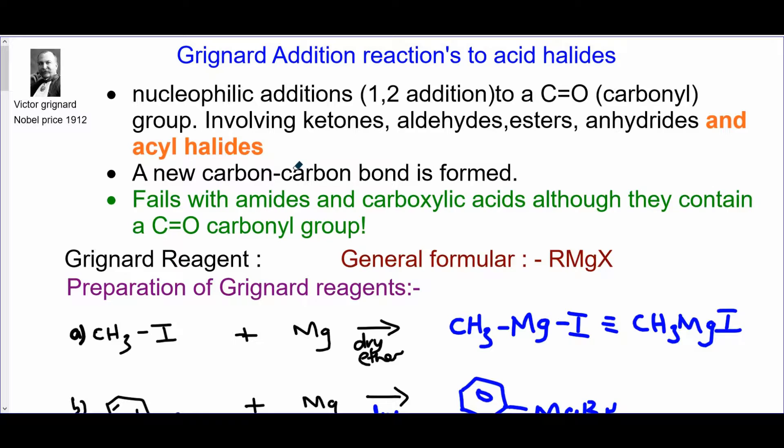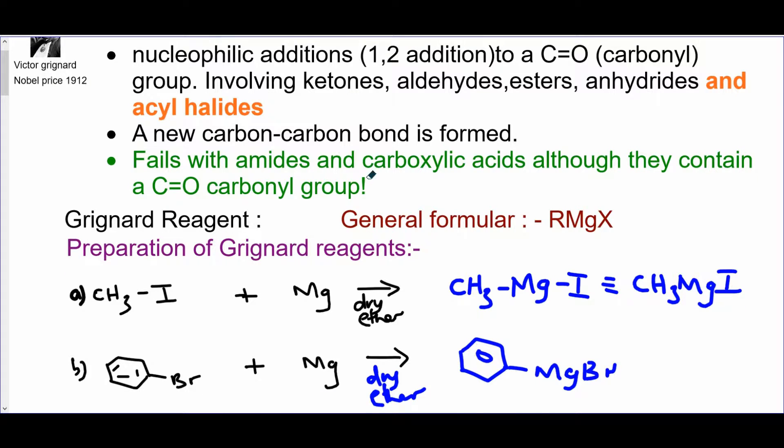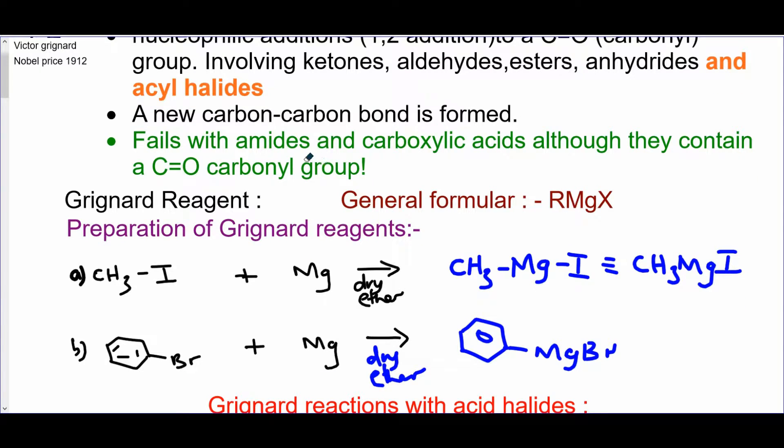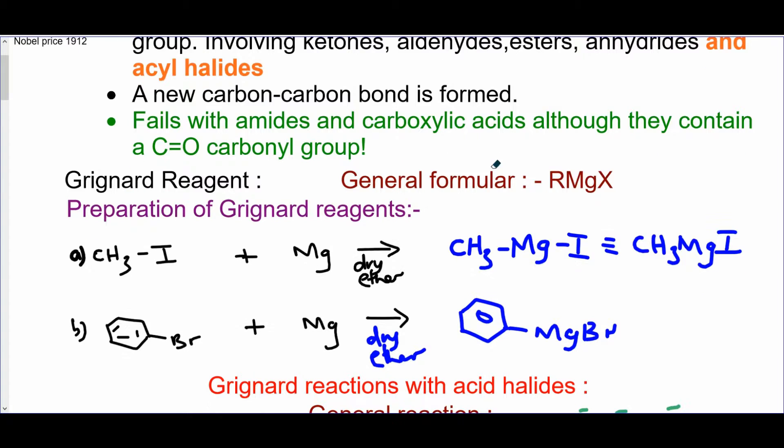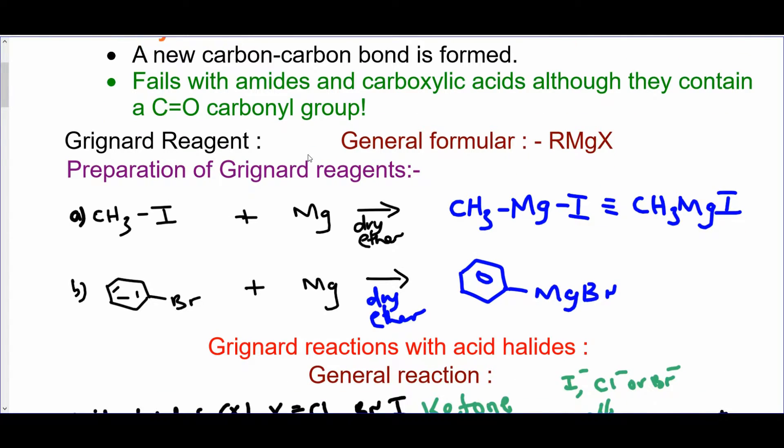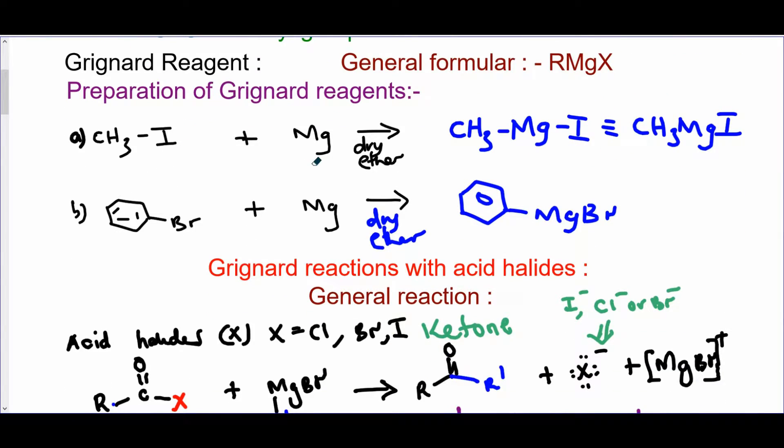Again, for review, you're forming a new carbon-carbon bond, but as I said in the other video, click the description below. Grignard reactions do fail with amides containing hydrogens on the nitrogen and carboxylic acids, although the amides and carboxylic acid contains carbonyls.